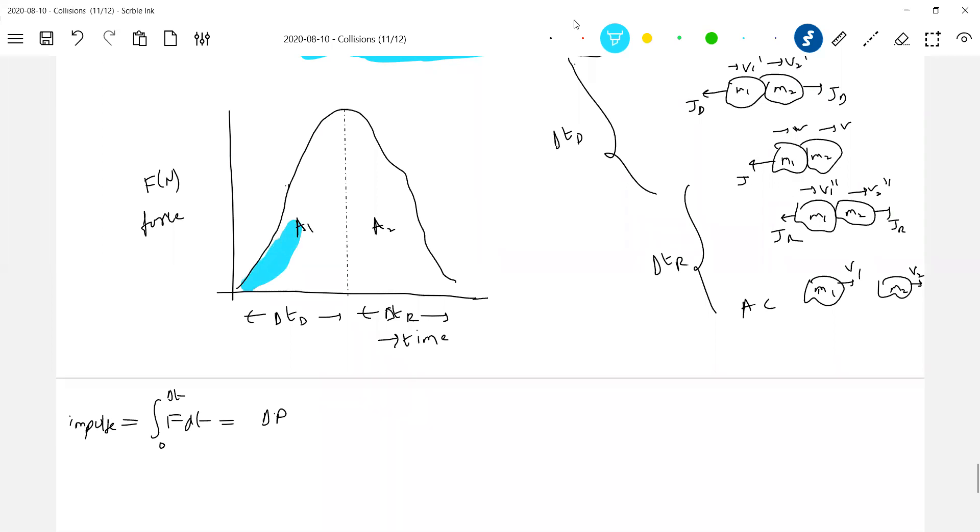So impulse equals area under Ft graph. We do have areas: this is area 1, this is area 2. So what is another way of measuring coefficient of restitution? I'll plot the force exerted by one object on another. The force will increase, becomes maximum, then decreases. So area under Ft graph is the impulse.